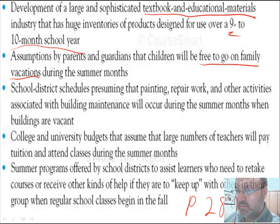Here's another constraint: school district schedules presume that painting, repair work, and other activities associated with building maintenance will occur during summer months when buildings are vacant. But I ask you, how do they do these same things in other industries — hospitals, nursing homes — where there are people there all the time? You just create a schedule for regular maintenance. It's an old euphemism that it has to be done in summer. Here's another one from the textbook: college and university budgets assume that large numbers of teachers will pay tuition and attend classes during the summer. But now with our online world, there's no reason this can't happen year-round.